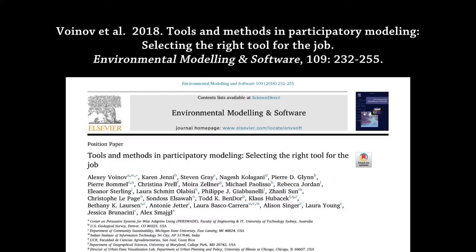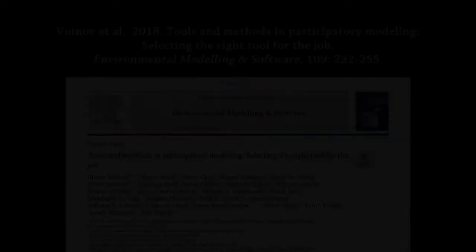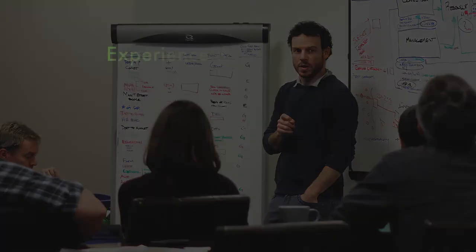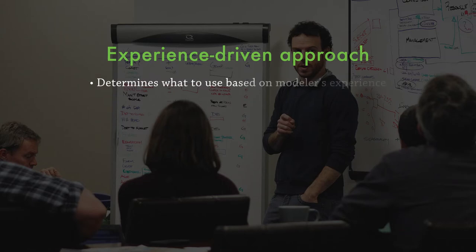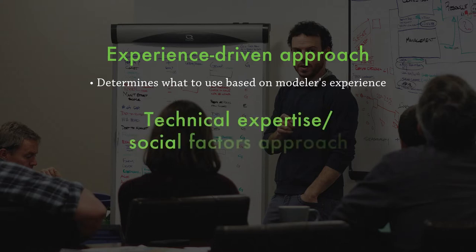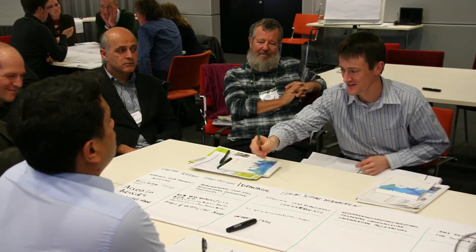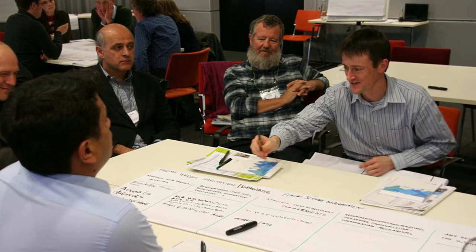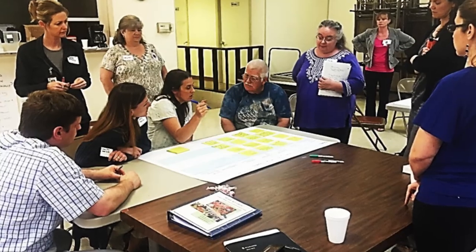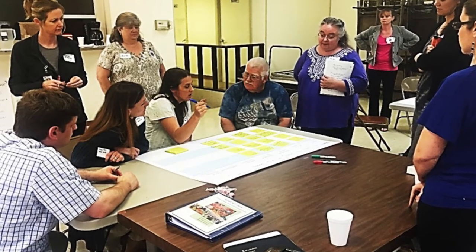In a 2018 paper on selecting tools for participatory modelling, Alexey Voinov and others identified two approaches for selecting methods applicable for integrated modelling. The first was the experience-driven approach, whereby the modellers' experience determines what to use — a less than ideal approach, as there is a risk of the hammer and nail syndrome. The other approach involves more careful consideration of the technical and social factors involved, including stakeholder preferences and constraints. In the context of participatory modelling, involving the stakeholders in the selection of tools and methods and in the modelling co-design process is considered to both empower the stakeholder by levelling the playing field and improve the legitimacy of the modelling.